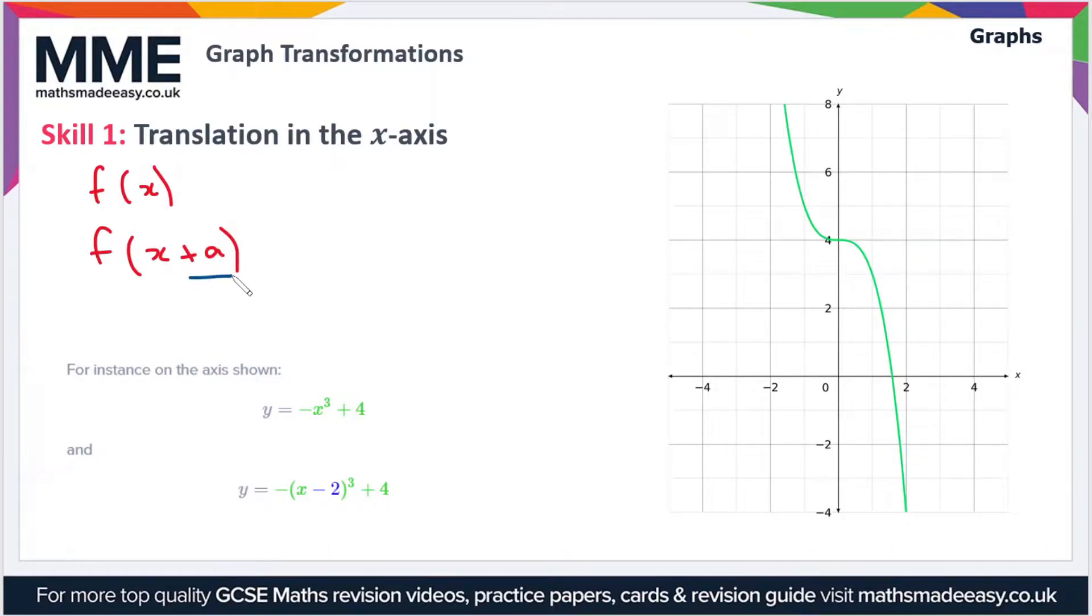The effect of this plus a on the end is that the whole graph is translated by a in the negative x direction. So if we have plus 2 on the end, then the whole graph shifts left two. If we have minus 3 on the end, the whole graph shifts right by 3.